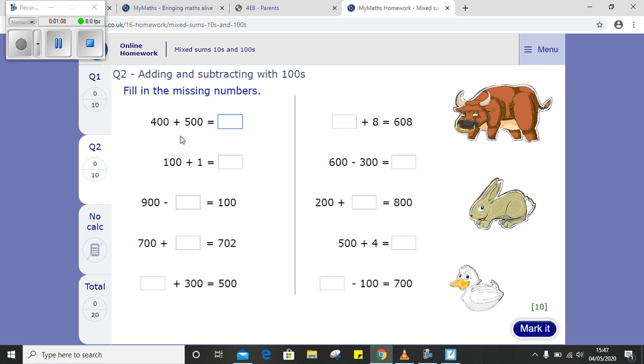These questions on here are looking at adding and subtracting with hundreds. So you're looking at filling in the missing numbers. Very similar to the last ones. 400 add 500 is equal to what? So think about if you know what 4 add 5 is, then maybe you can work out what 400 add 500 is. Try and make it simpler for yourself.